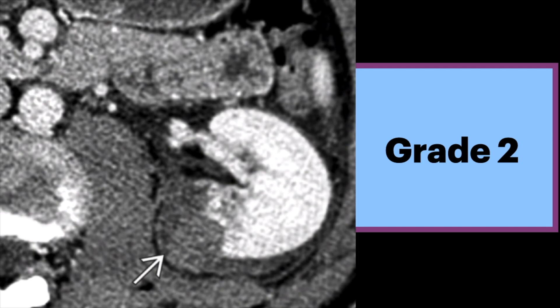In this axial CT during the corticomedullary phase, there is a hematoma in the left kidney whose size is consistent with a grade 2 injury.